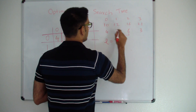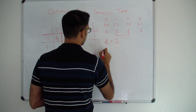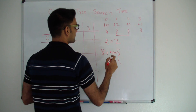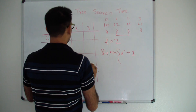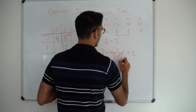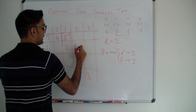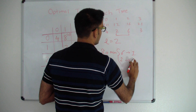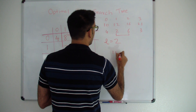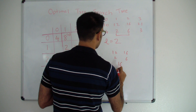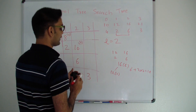For cell (1,2), keys 12 and 16 with frequencies 2 and 6. The sum is 2 plus 6 equals 8. Plus minimum of: if key 1 is the root, cost is whatever is at (2,2) which is 6; if key 2 is root, cost is whatever is at (1,1) which is 2. We pick 2, so 8 plus 2 equals 10, with key 2 as root. This means 16 is the root and 12 is the left child: cost 6 plus 2 into 2 equals 10.